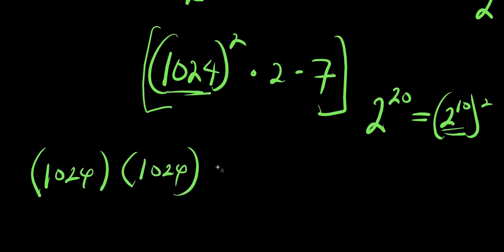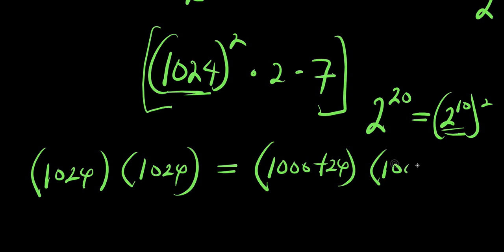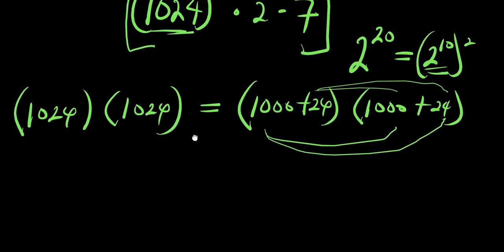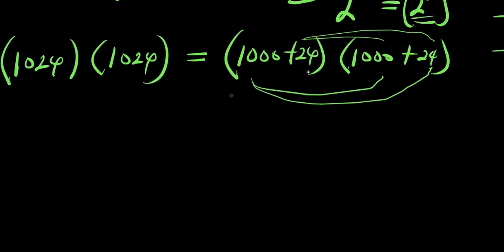That is 1024^2. I can write 1024 as 1000 plus 24. So (1000 + 24) times (1000 + 24). Multiplying this out: 1000 times 1000 is 1,000,000, plus 1000 times 24 is 24,000.